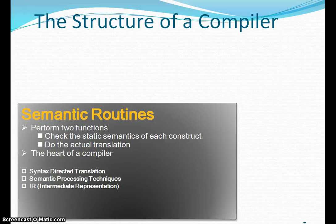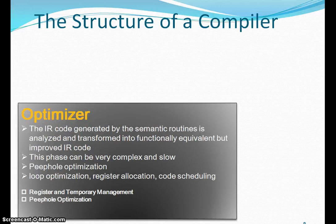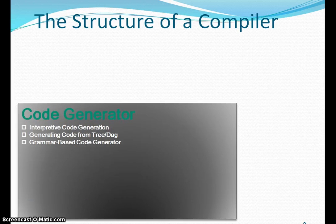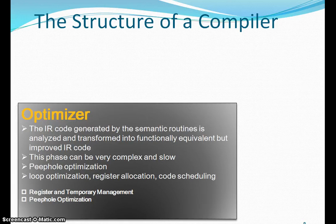Then the optimizer — done after semantic analysis — basically just tries to optimize the code. It reduces the number of lines in the program and reduces the complexity of the code. The complete process is very complex and slow, but the output of that phase has quite fewer lines of code.